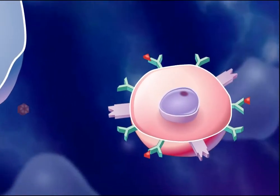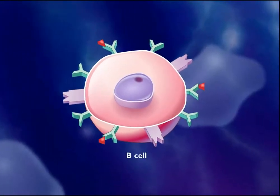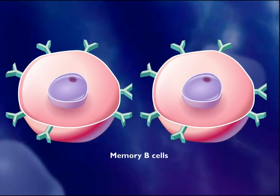Some of the B-cells do not turn into antibody factories, but instead become memory B-cells that may survive for several decades. Because of these memory B-cells, the secondary immune response to a future infection by the same pathogen is swifter and stronger. This powerful secondary immune response is what gives immunity to some diseases after you have had them once or after you have been vaccinated.